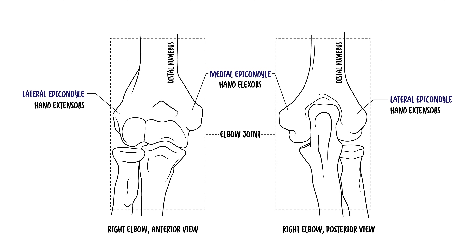In summary, medial elbow tendinopathy — also known as golfer's elbow — involves tendinosis at the common origin of the flexor-pronator muscle group. It's typically seen in people who perform repetitive flexion and pronation of the wrist, such as in golf or throwing sports. Treatment includes conservative management, corticosteroid injection, and very rarely surgery.